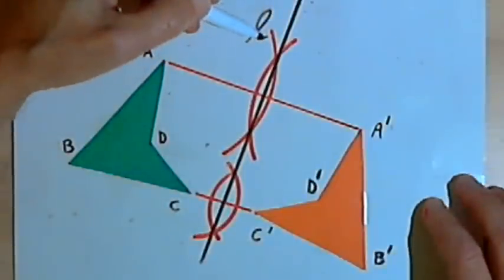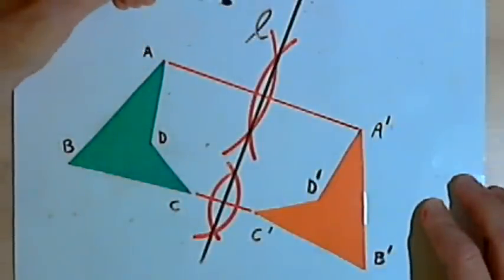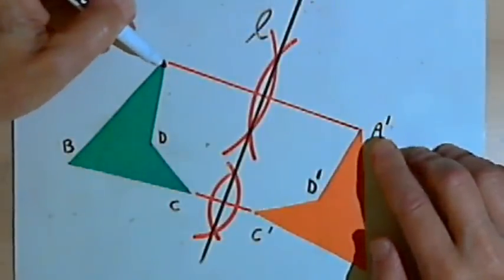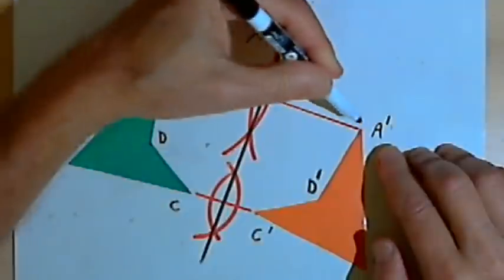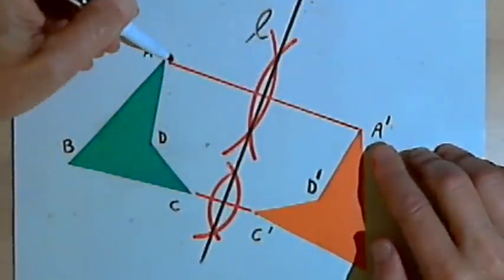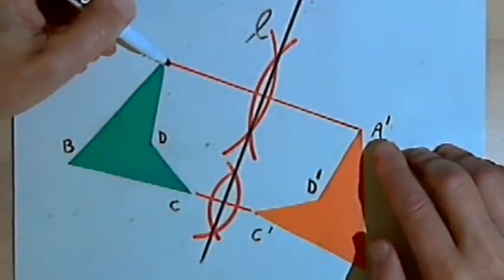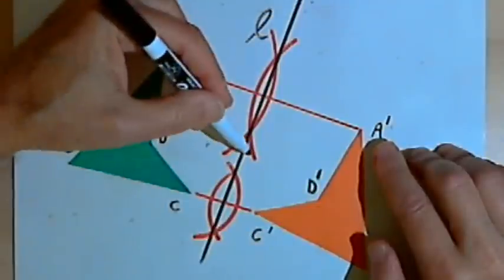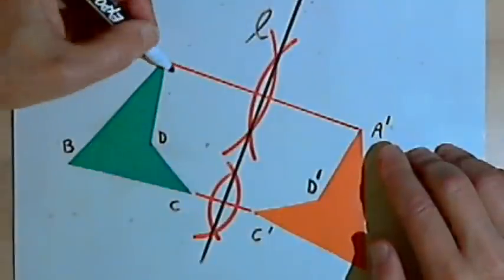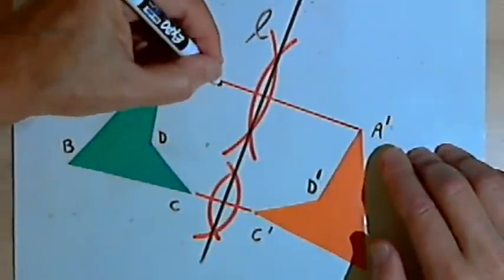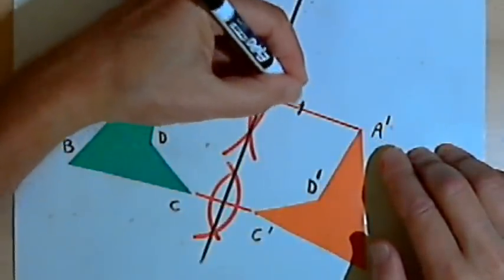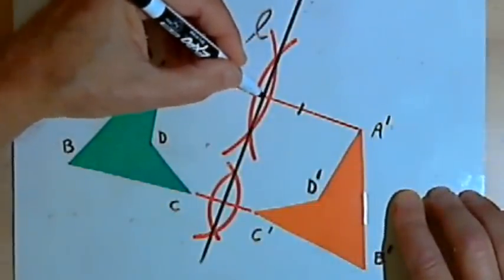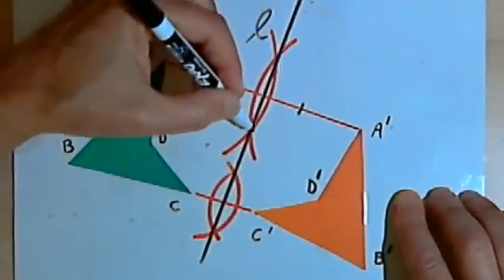Now here's why this works. When you reflect an image, each point on the image and its corresponding point, those pairs of points are going to be the same distance away from the line of reflection. So since I bisected line segment A, A prime, I know that a line that goes through that point of bisection is going to be part of my line of reflection.